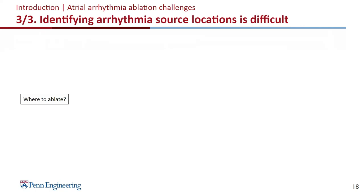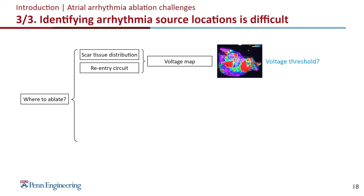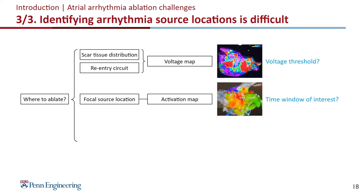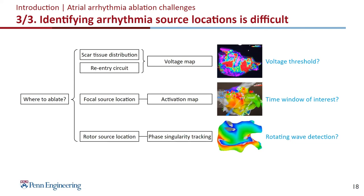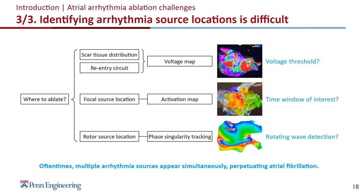The third challenge is that identifying arrhythmia source locations is difficult. The biggest question is where to ablate. Voltage maps could help find scar distributions but depend on a correct choice of voltage threshold. Activation maps can help identify focal source locations but depend on the time window of interest. Phase singularity tracking can help find rotor source locations but doing the tracking is not trivial. Furthermore, multiple arrhythmia sources often appear simultaneously, perpetuating atrial fibrillation.